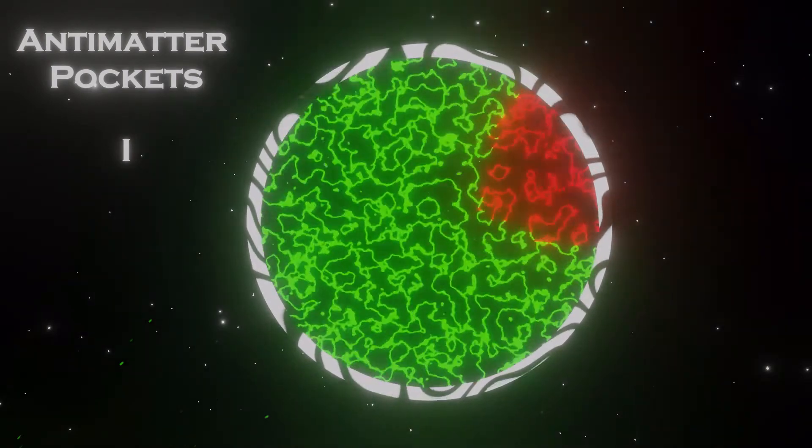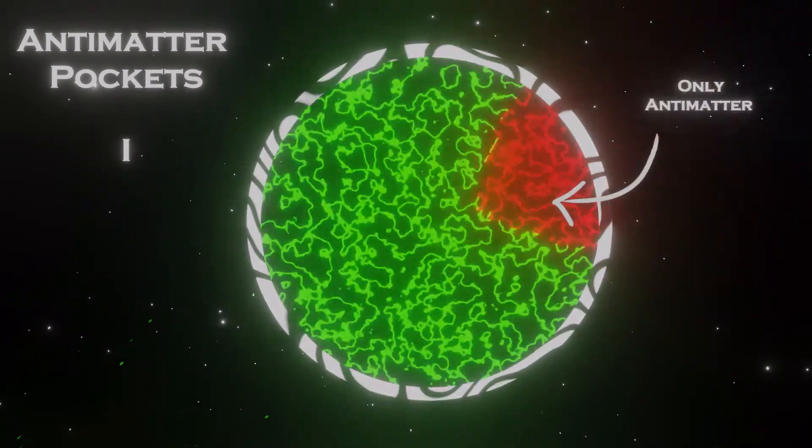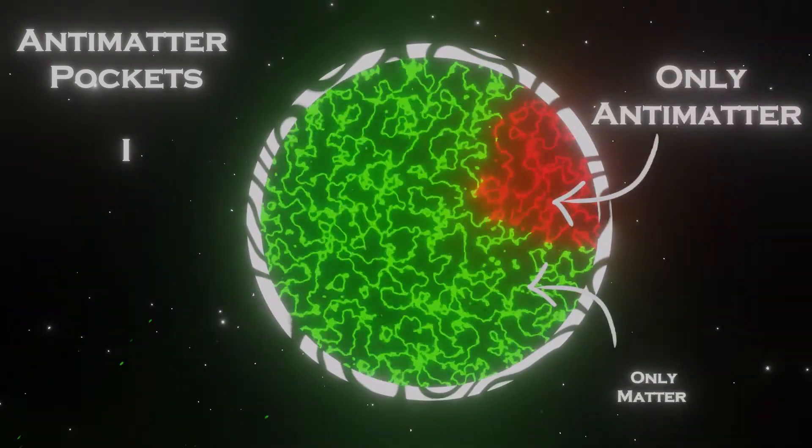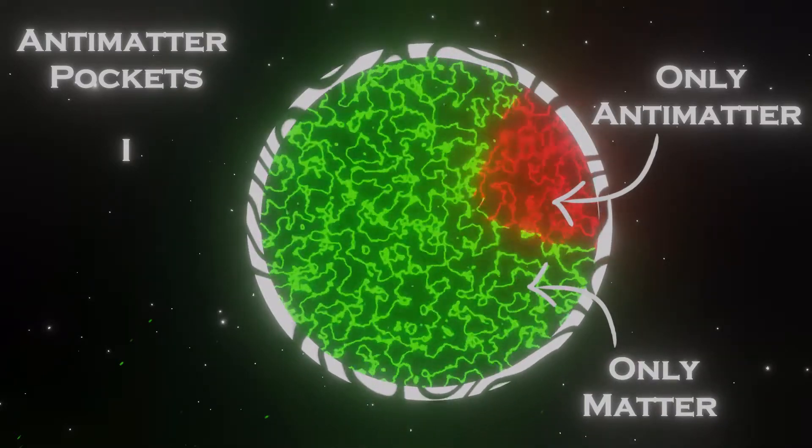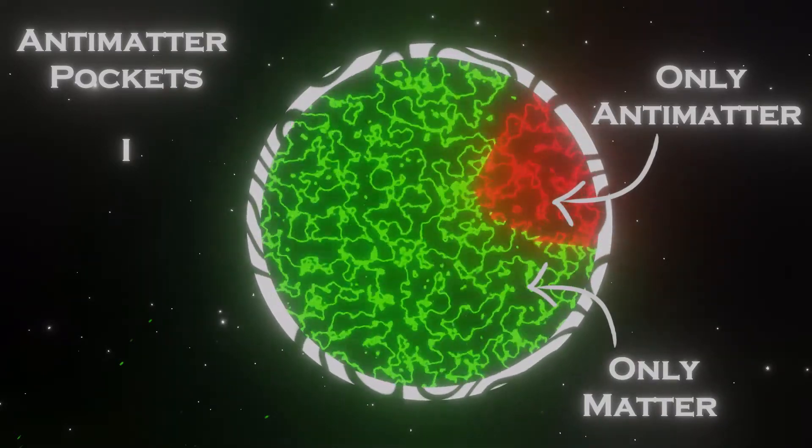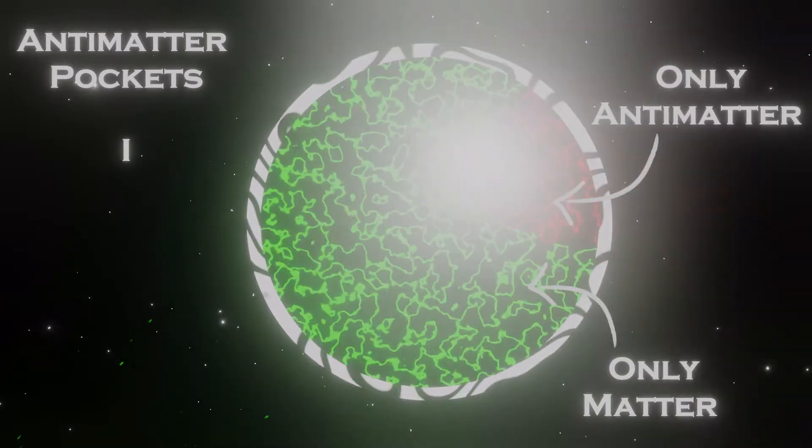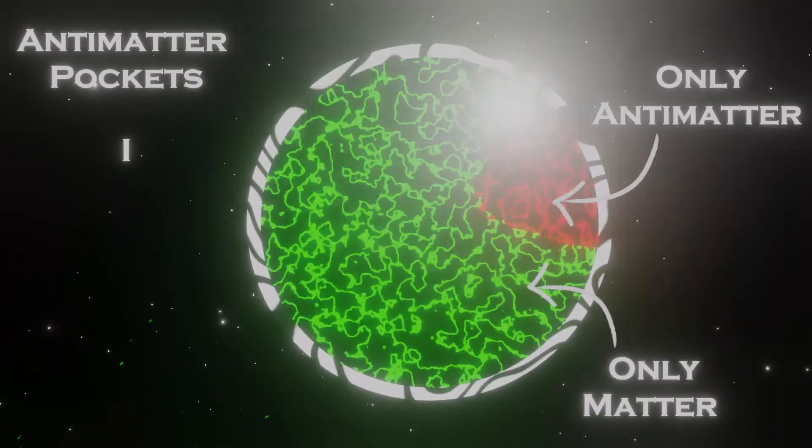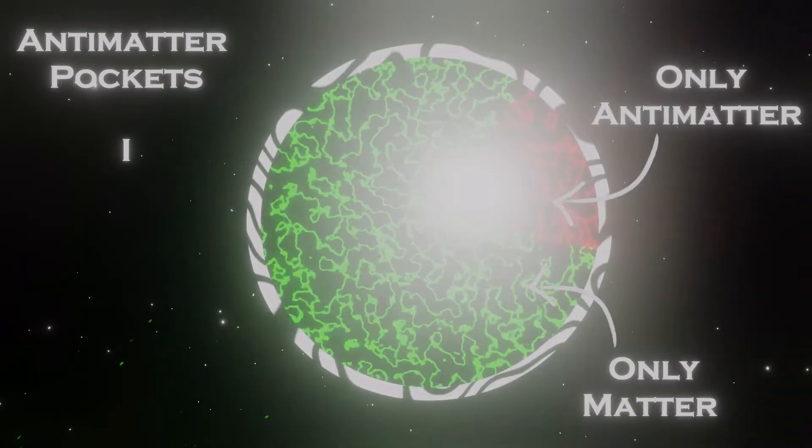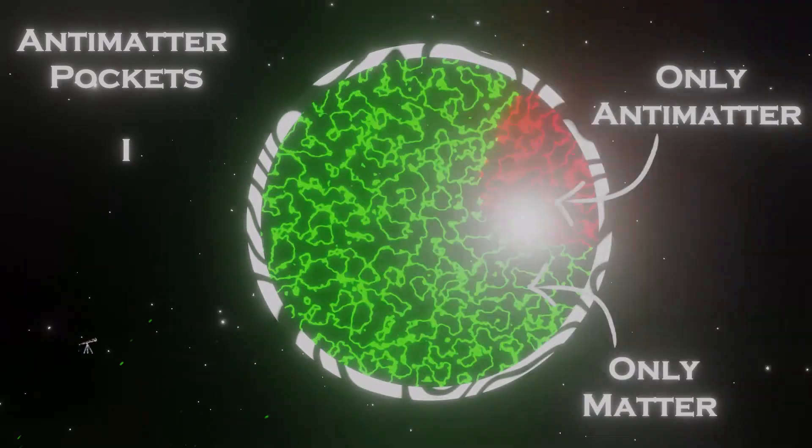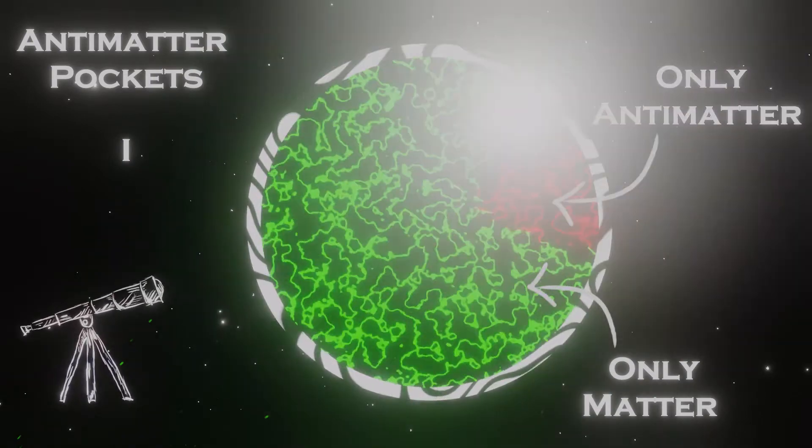One such suggestion was that antimatter resides in areas of the universe without matter. These areas would have anti-planets, anti-stars, and anti-galaxies. But if this was true, there would be a lot of matter-antimatter annihilation occurring at the border of these two regions of space, emitting vast amounts of radiation that would have been detectable here on Earth.